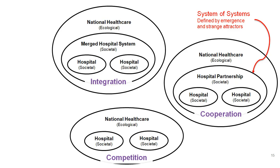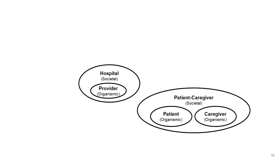A third way to combine societal systems within ecologies is systems of systems that cooperate with each other. Here I have two hospitals — two societal systems within the national ecosystem — but this time I create a societal system around them that's different from the merged hospital system. In a hospital partnership, the two hospitals remain distinct but have agreements or shared services that form a partnership. The level of cooperation is different from full integration, but all of this always takes place within the ecological system in which those societal systems reside.